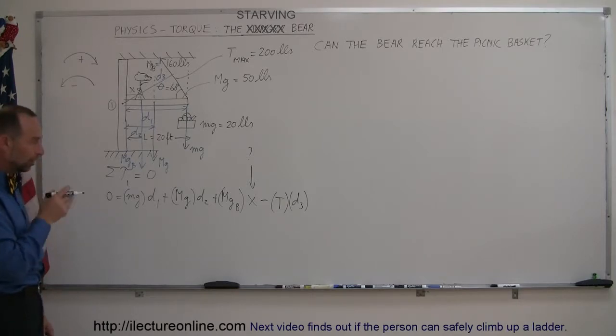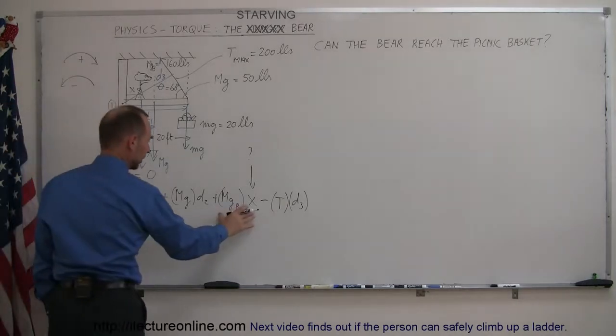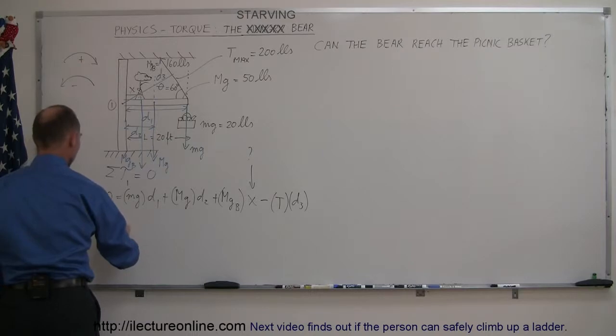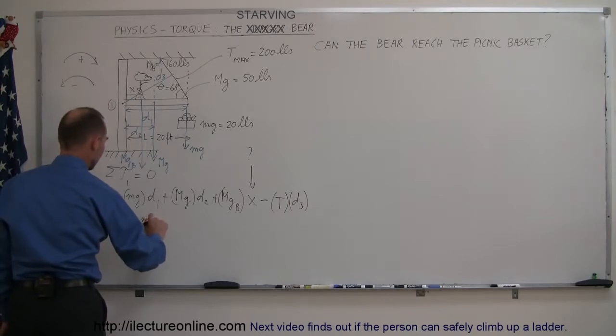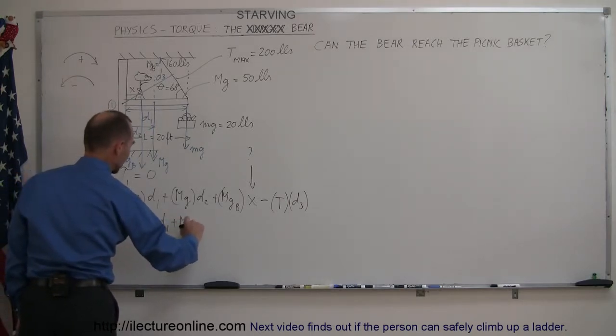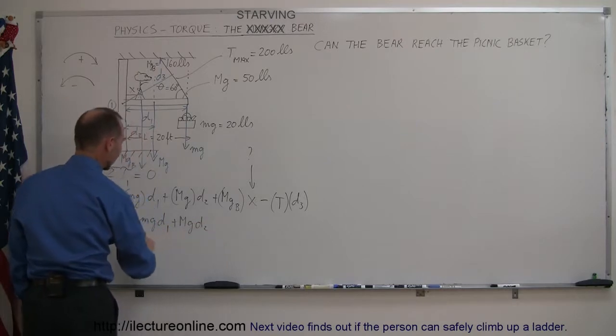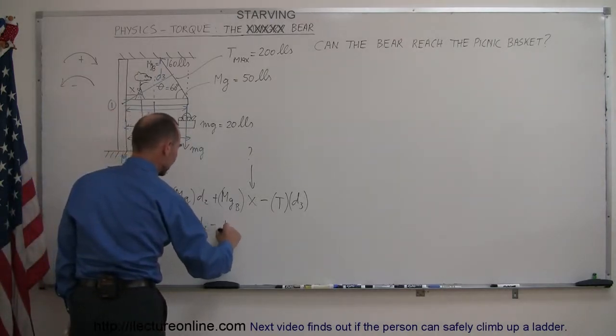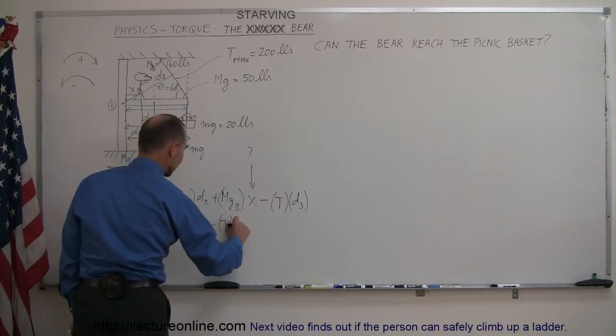Now since we're looking for X, we're going to take this term and move it over to this side. So that becomes the minus MG of the bear times X equals, and on the right side we still have MG D1 plus MG D2, that's a little MG, that's a big MG. This is now on the other side and minus the tension of the cable times D3.